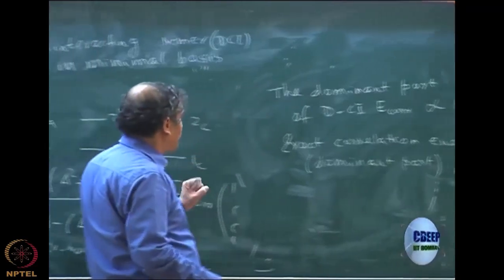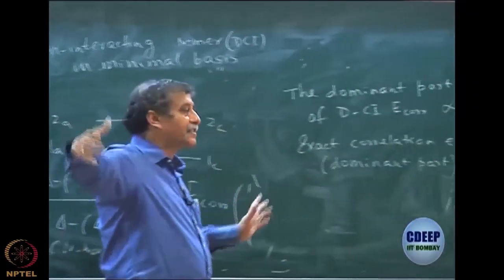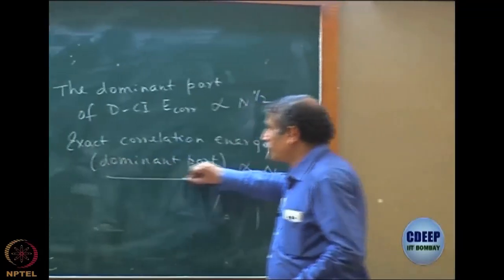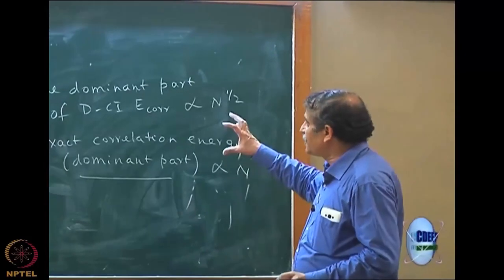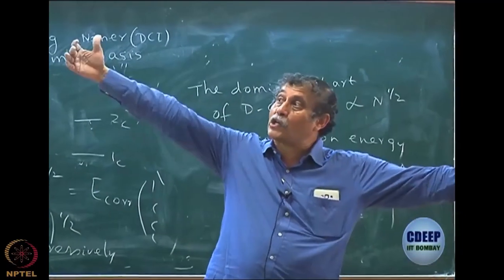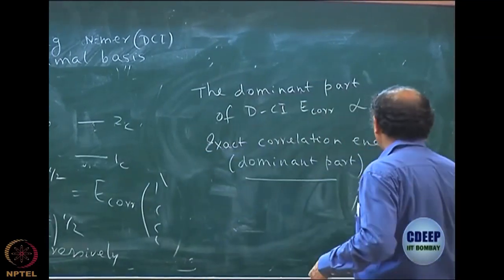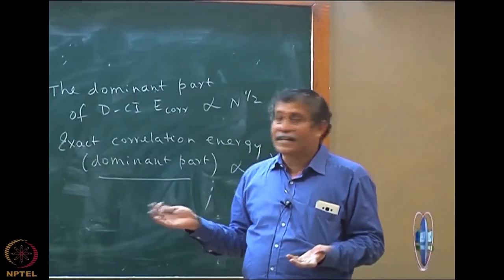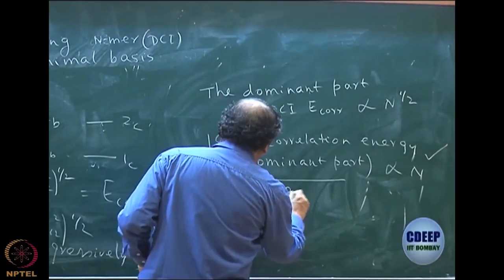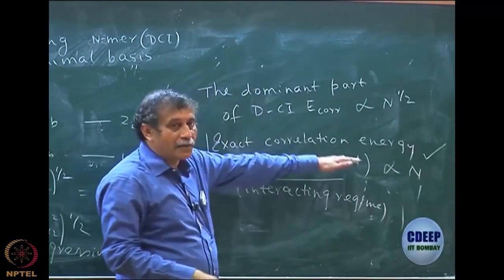This is somewhat different because if I am looking at dimers or trimers or n-mers at infinite separation, the exact correlation energy is exactly n times the monomer value. The reason I write 'dominant part' is that this is a general theme that occurs even when they are interacting. Even when they are not non-interacting — when they are coming closer — the dominant part should still be proportional to n.